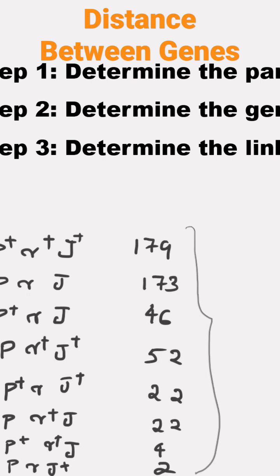For that, you need a systematic approach, a stepwise process. So, first step is to determine the parental genotype. How to find the parental genotype? The genotype that found most frequently are the parental genotypes.